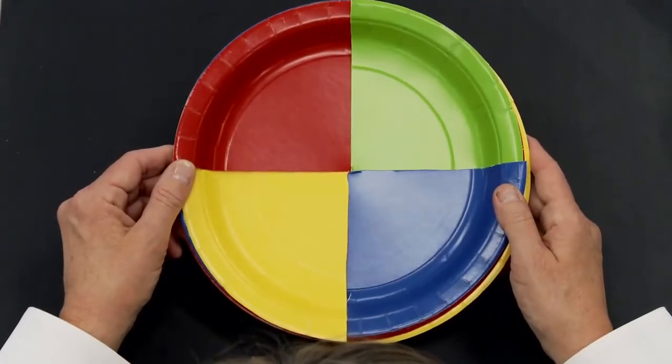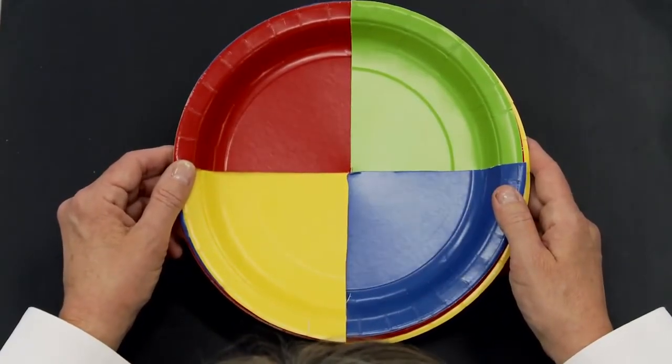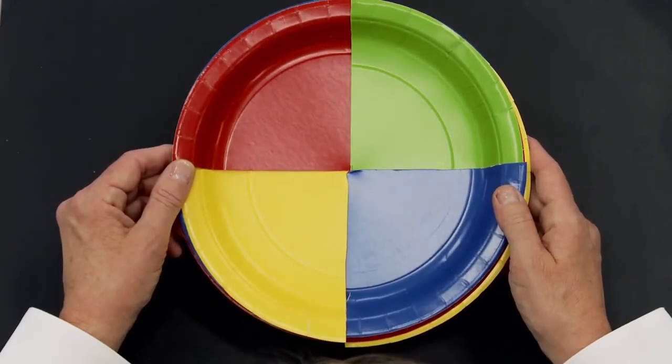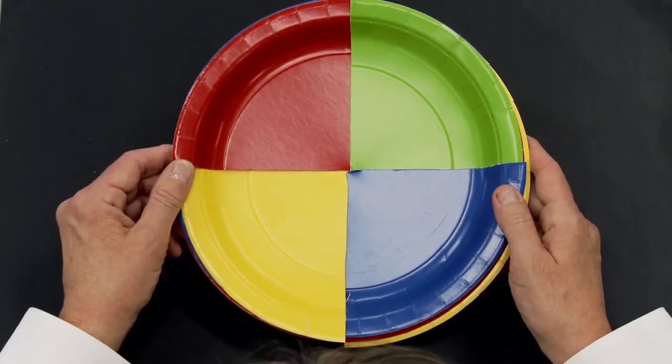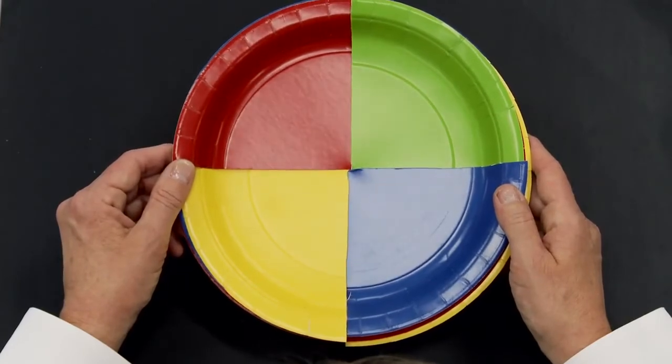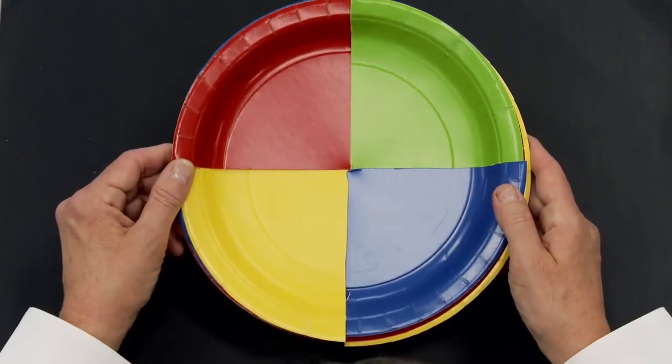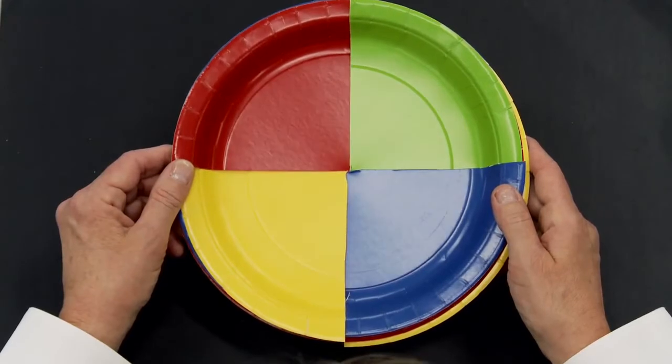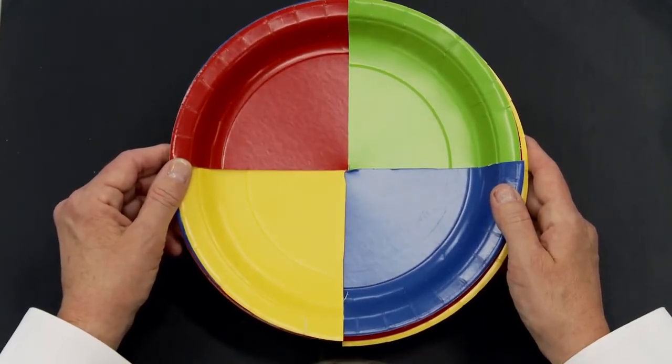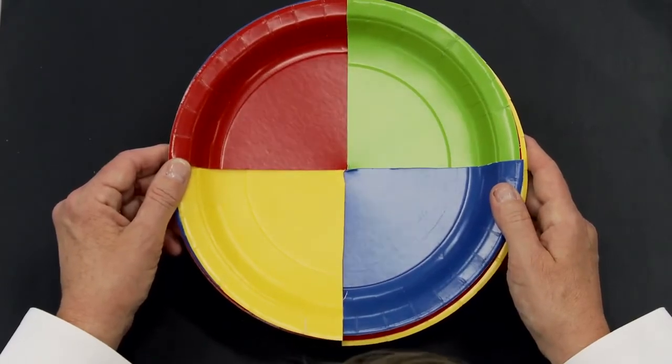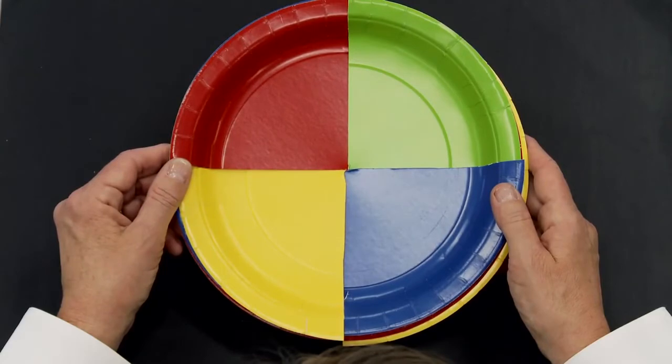The number of plates that you use to make these circle fractions with is dependent on your grade level standards. It doesn't matter whether you're a common core state or you're a state that uses their own standards. Align the number of plates to the kind of fractions you need to show with students. For example, in the common core standards for first grade, students are required to know halves and fourths. So if I were going to start this with first grade, I'd start with two plates. And we'd talk about halves. And we have an example of that.